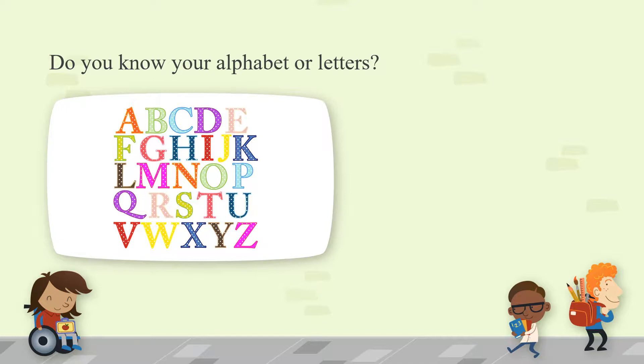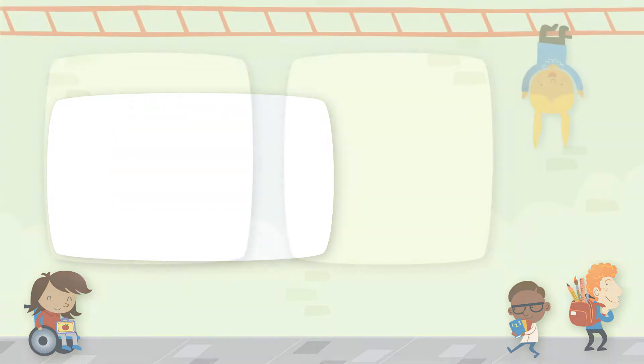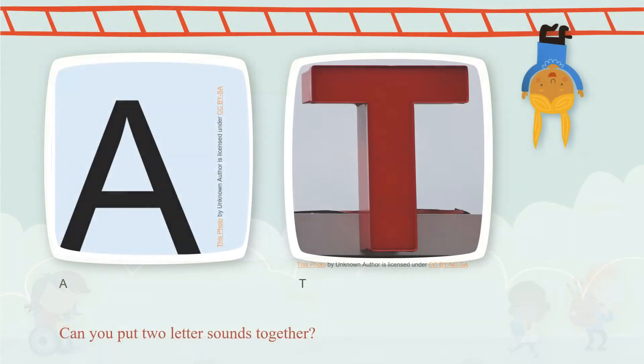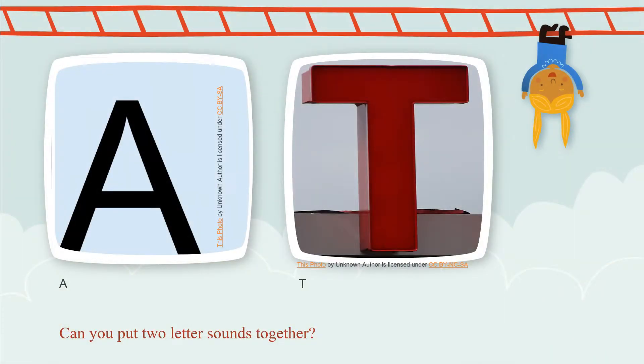Now do you know what sounds your letters make? Such as A says 'ah,' H says 'huh,' C says 'k,' D says 'duh.' If you do know the sounds of your letters, that's great — now we can move on to reading words.